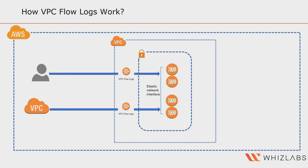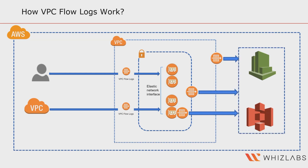Users can create VPC Flow Logs for an entire VPC, a subnet, or a specific network interface. Additionally, they can customize the fields captured in the logs to meet their specific needs, such as logging only specific IP ranges or protocols. This data is then stored in a specified Amazon S3 bucket or CloudWatch Log Group, which you can later analyze using various tools and techniques. A new log stream or log file object is created for each new network interface as soon as any network traffic is recorded for that interface.